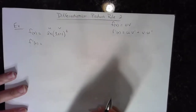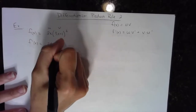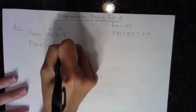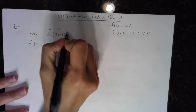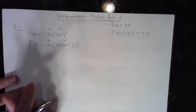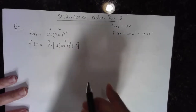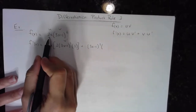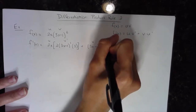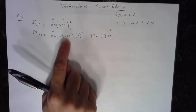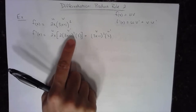My first derivative equals the first — copy it down — times the derivative of the second. The derivative of v is a chain rule: bring the 2 down, keep the base, subtract 1 from the exponent, and multiply by the derivative of the inside. So this is u times v prime. Then plus the second, (3x + 1) squared, times the derivative of the first, which is 2. If you forgot how to use the chain rule, check out that video.